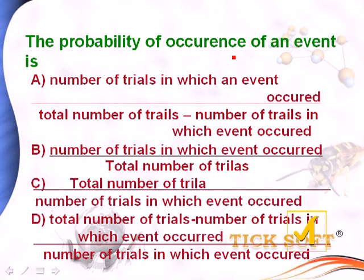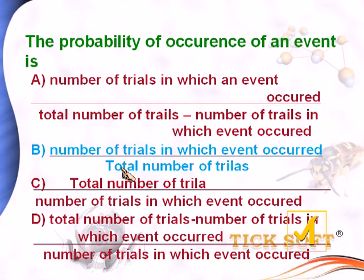The probability of occurrence of an event is: option a, number of trials in which an event occurred by (total number of trials minus number of trials in which event occurred); option b, number of trials in which event occurred by total number of trials; option c, total number of trials by number of trials in which event occurred; option d, (total number of trials minus number of trials in which event occurred) by number of trials in which event occurred. The probability of occurrence of an event is option b: number of trials in which event occurred by the total number of trials. So option b is the right answer.